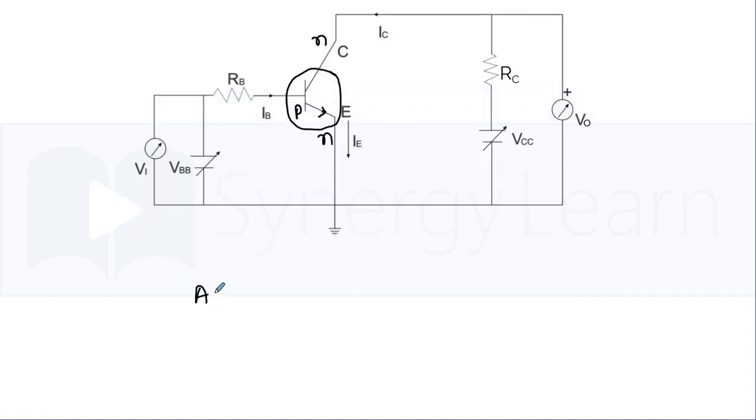This transistor is biased in active mode in which the base-emitter is forward biased and base-collector is reverse biased, with base being a poor conductor because it is a thin region and consists mainly of depletion region.